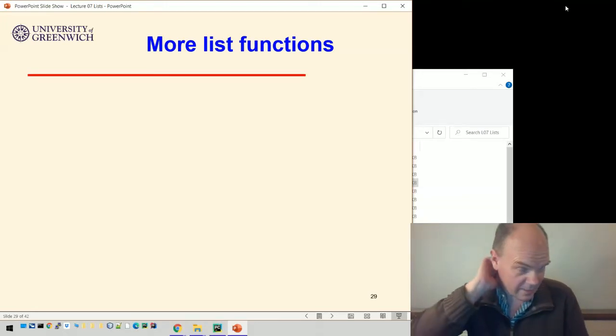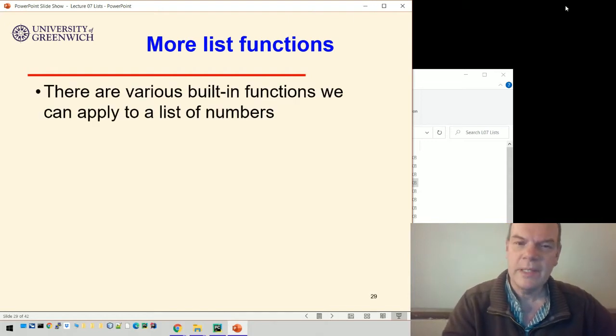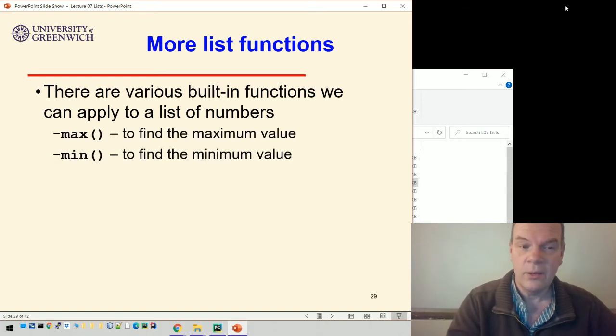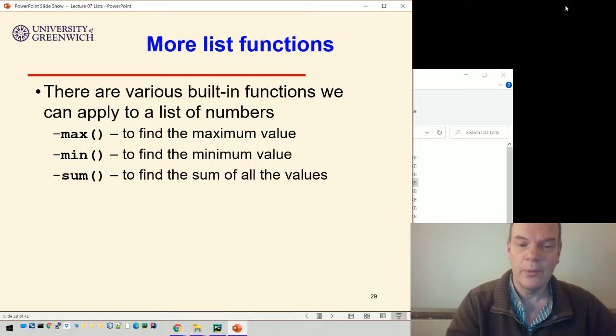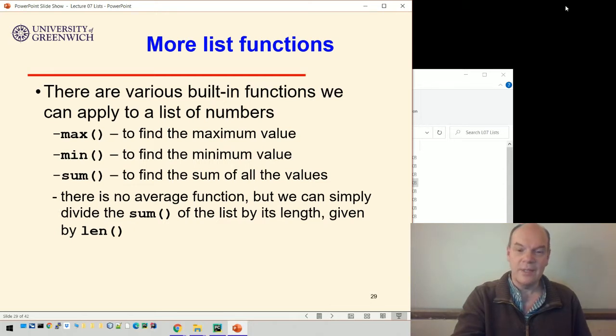Okay, what else can we do with functions and lists? There are various built-in functions in Python that you can apply to a list of numbers, like max, min, or sum to find the maximum, minimum, or sum of all the values. You can't find the average with a built-in function, but actually...